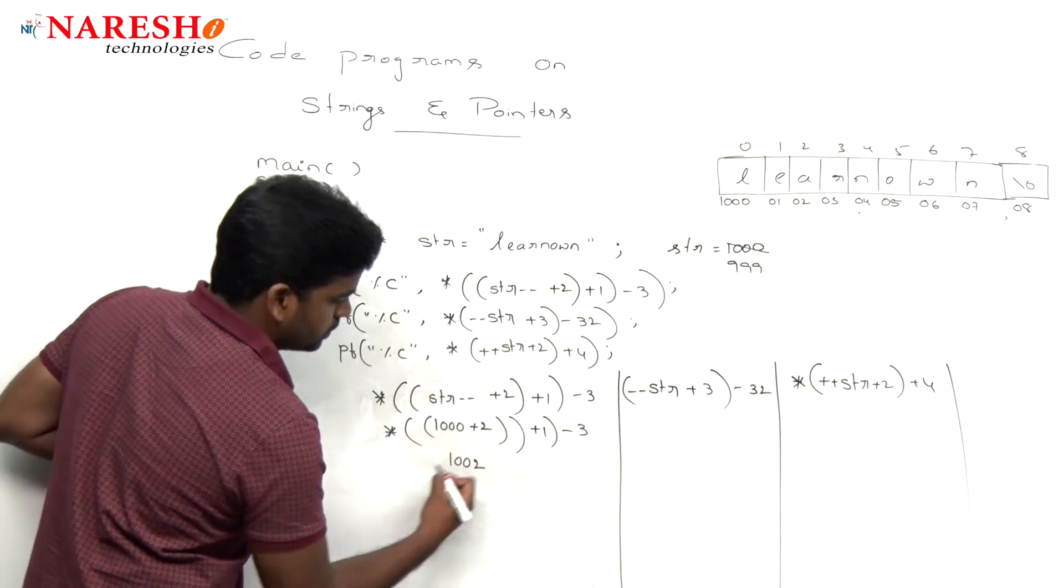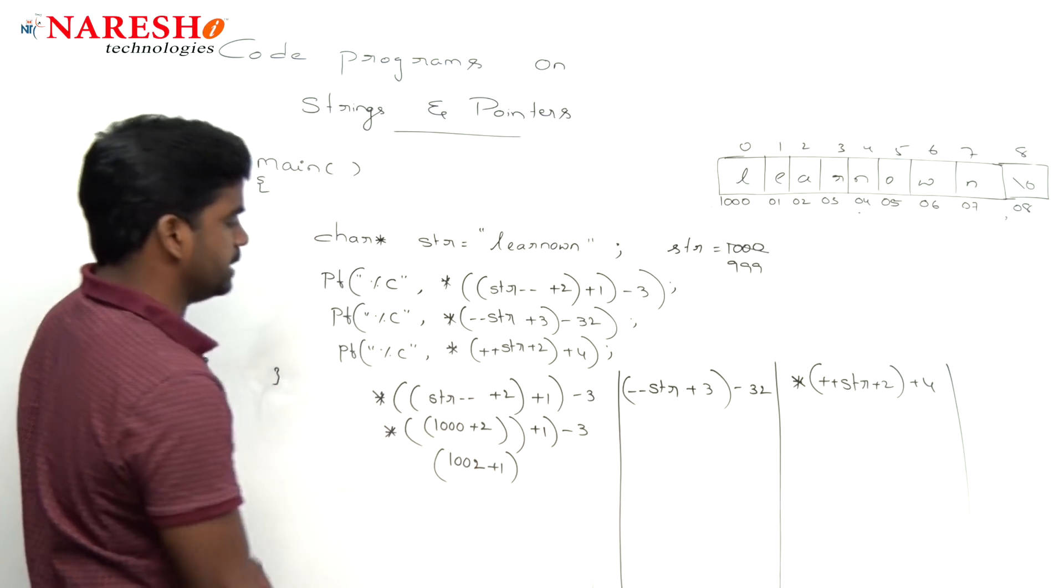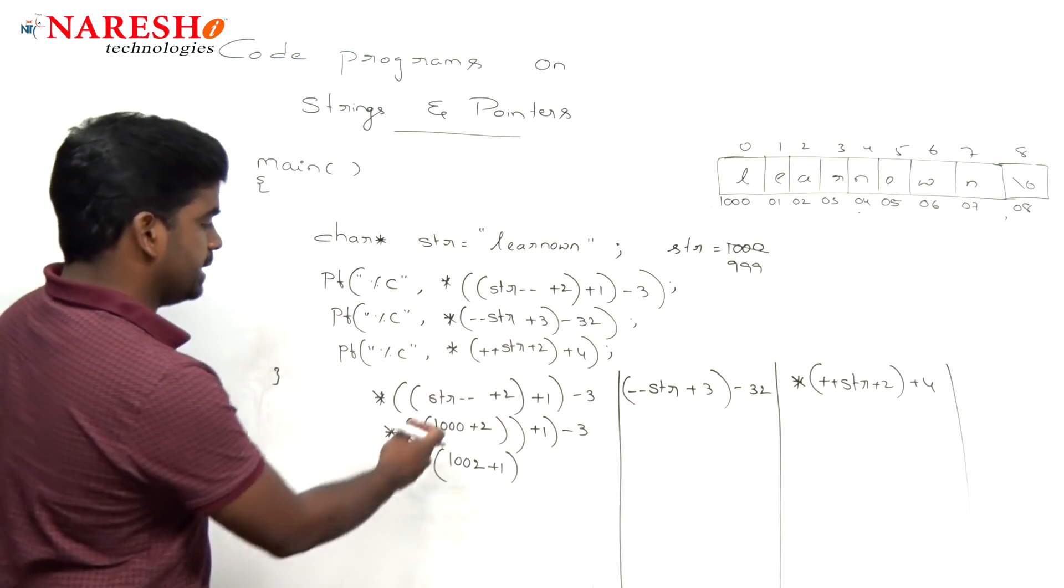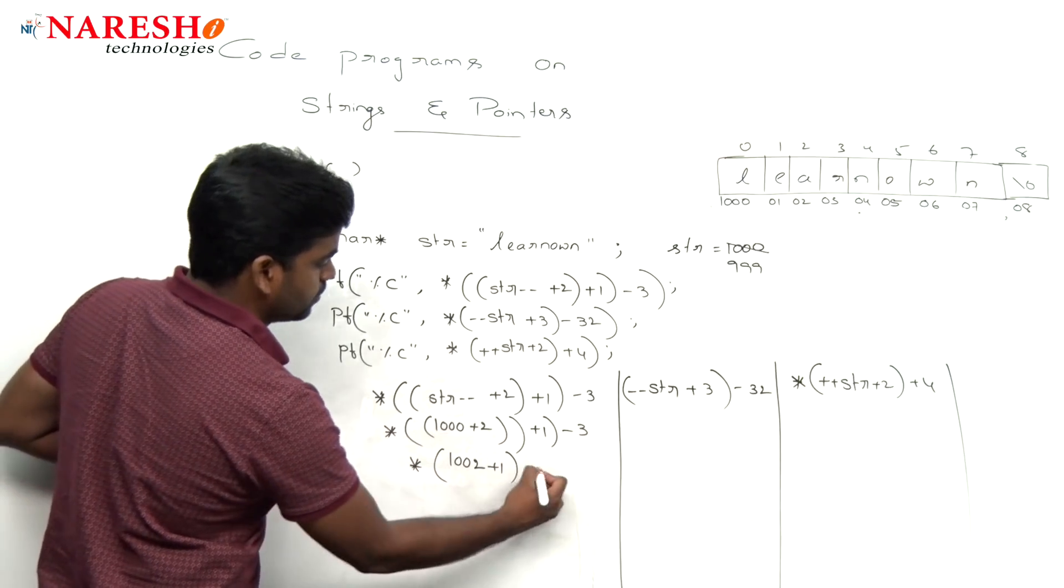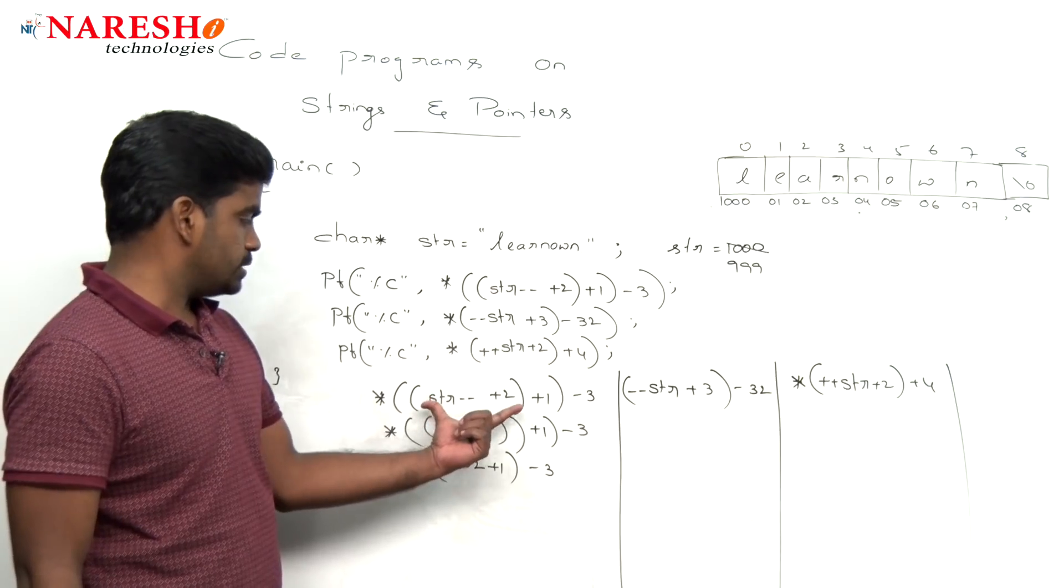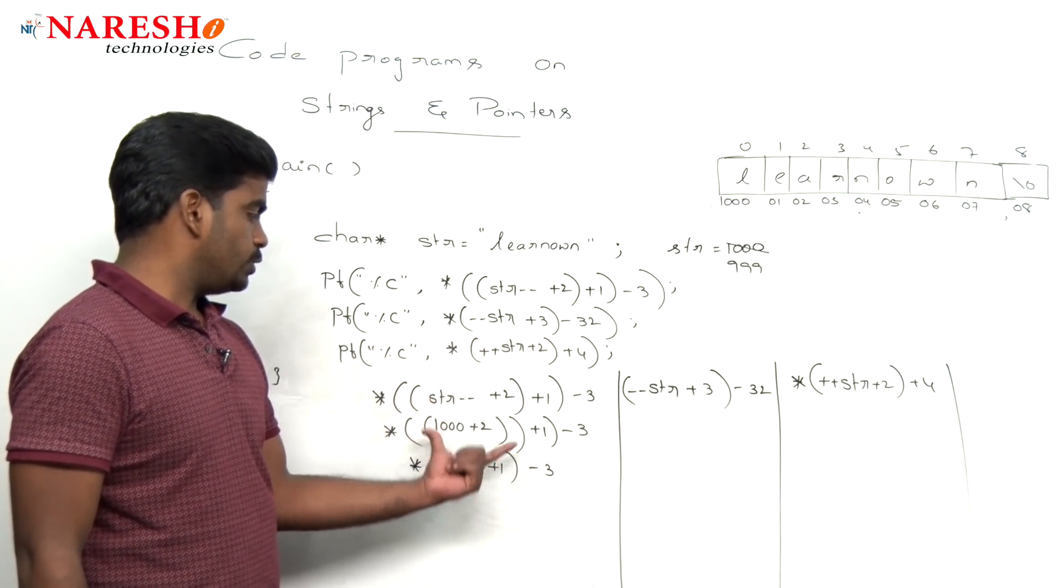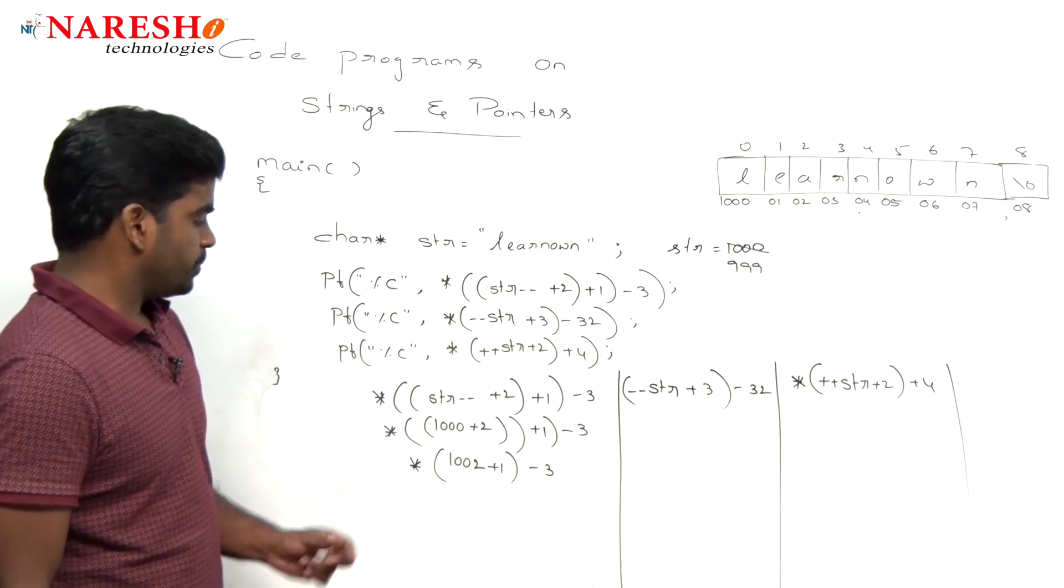Here it is 1000 plus 2, here it is 1000 plus 1, and here it is a pointer minus 3. Here it is str, 1000 plus 2 is 1002, 1002 plus 1 and then pointer.